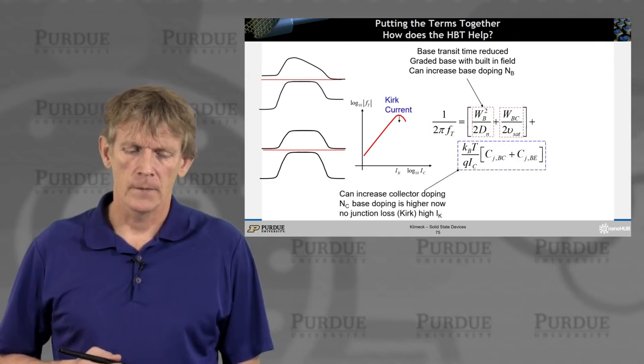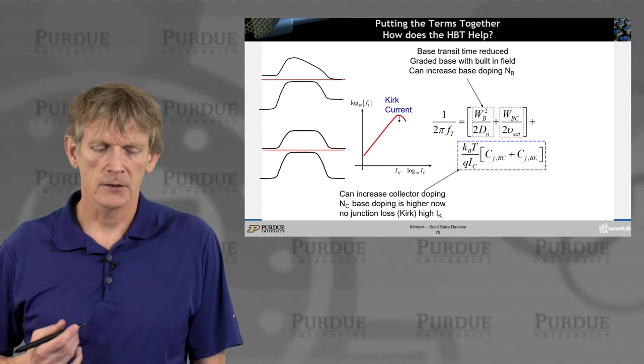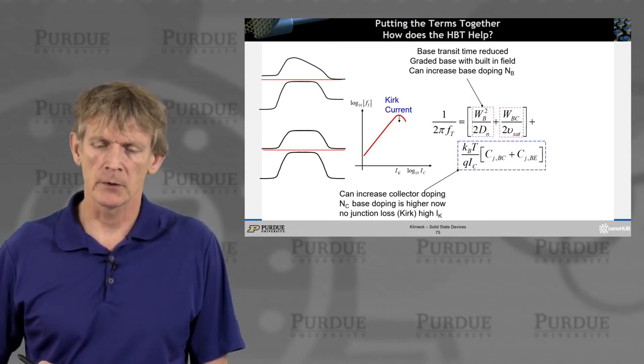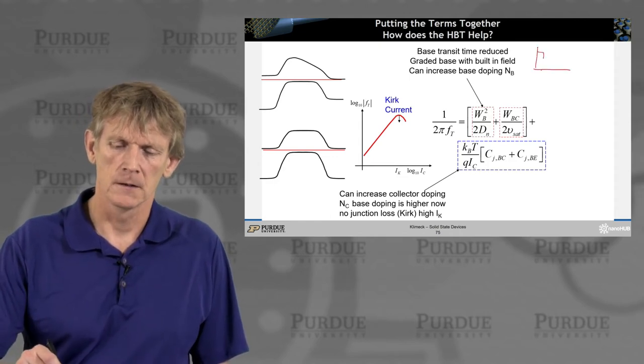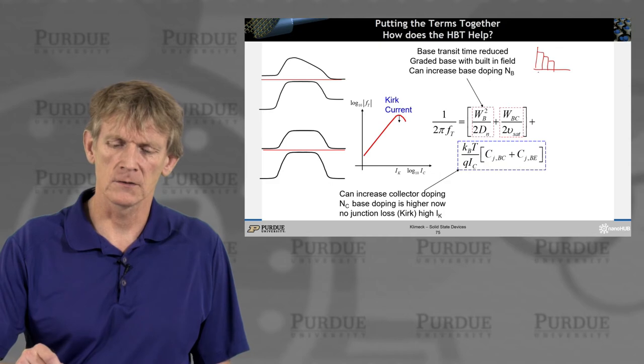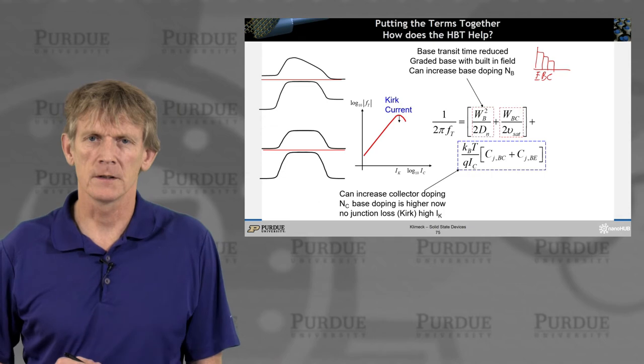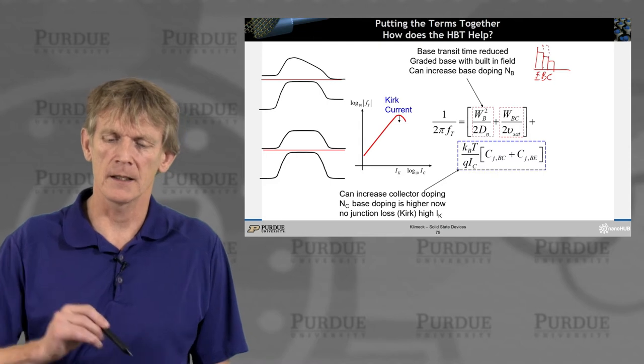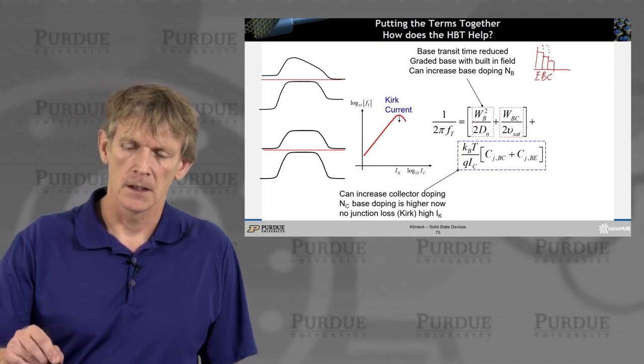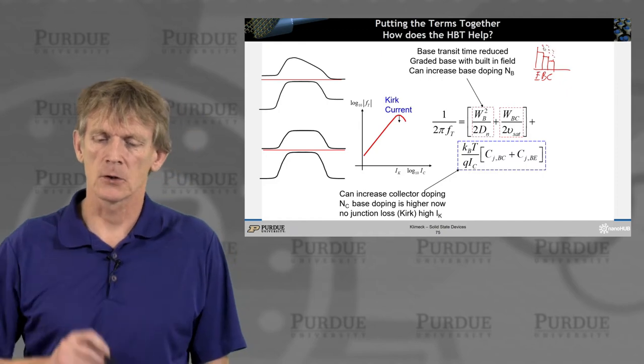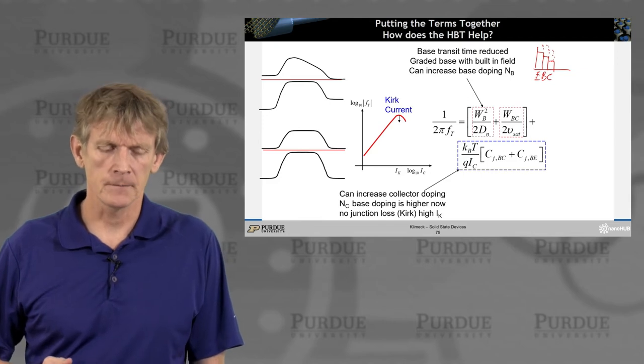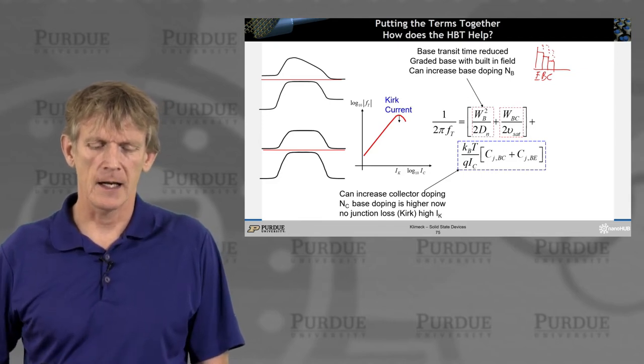Now, we had discussed that we can increase the collector doping now because we ramped up the base doping. Remember, early on, we had always sketched the three doping levels like this: emitter doping, base doping, collector doping. They were in this order. We talked about an inverted doping here where the base can be higher than the emitter. And that means you can also bring up the collector doping.